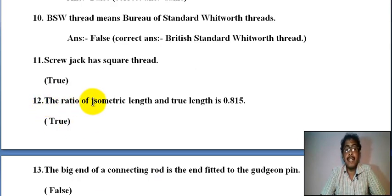Number twelve: the ratio of isometric and true length is 0.815. It is true.